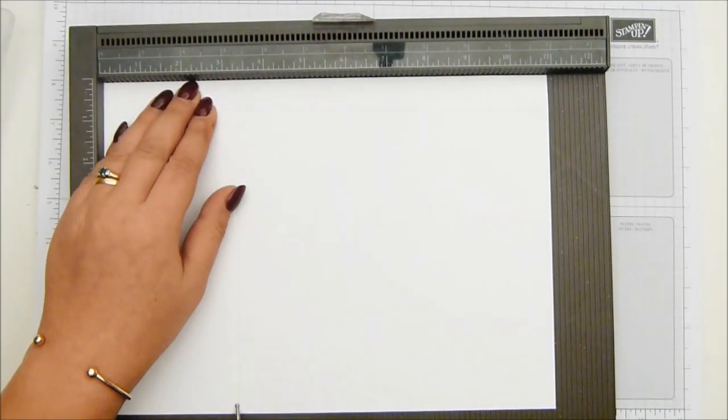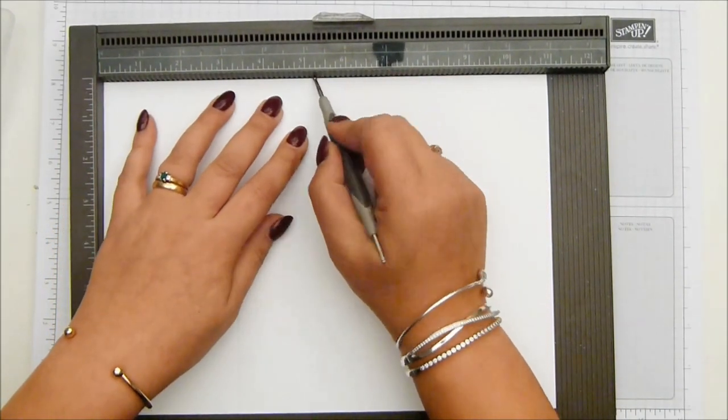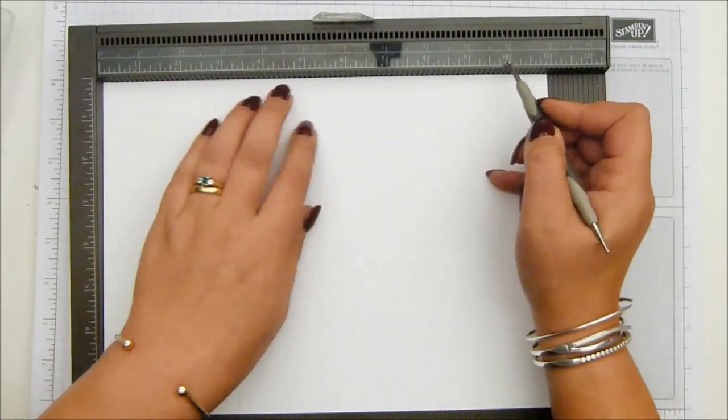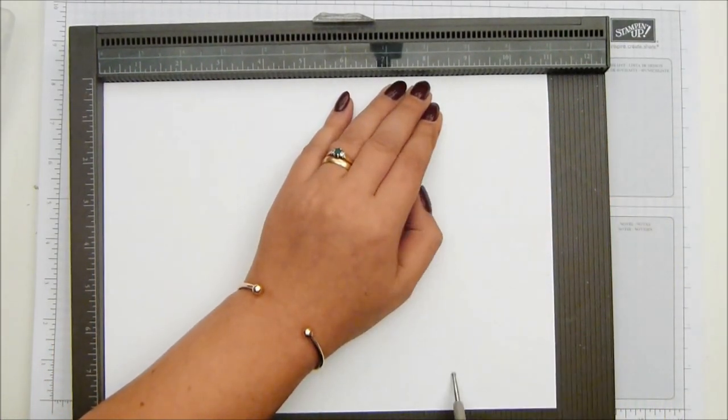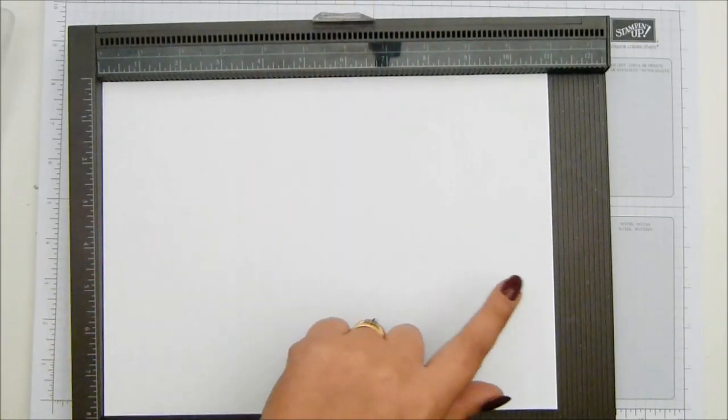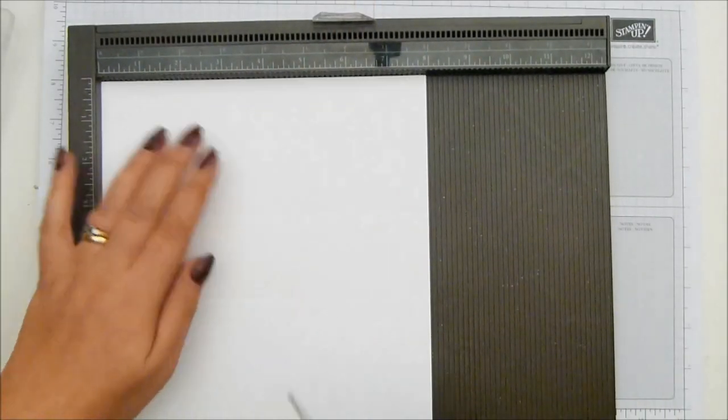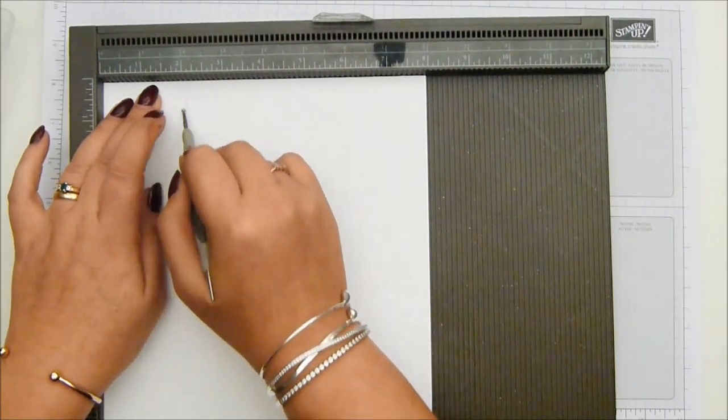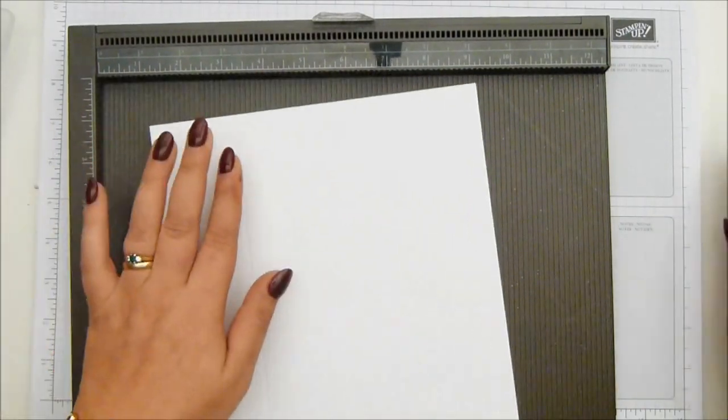So long side, score it at three and a quarter, five and a quarter, eight and a half and ten and a half inches, which in metric is 8, 13, 21 and 26. And then turn it to one side and score it at two inches, which is five centimeters.